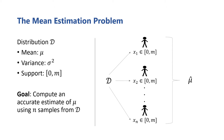Here there's some distribution d that has unknown mean mu, some variance sigma squared, and support on the subset of the interval 0 to m. The goal is to take n samples from the distribution and use them to accurately estimate its mean. Framed in a user-centric perspective, we assume there are n users, each holding a single sample drawn from this distribution, and we want to collect their data to estimate the mean.